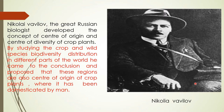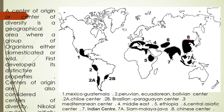By studying the crop and wild species biodiversity distribution in different parts of the world, he came to the conclusion that these regions are also the centers of origin of crops, where it has been demonstrated by man. He also proposed the Law of Homologous Series of Variation, which states that related species share certain common characters, and therefore a character present in one species is expected to be observed in related species.